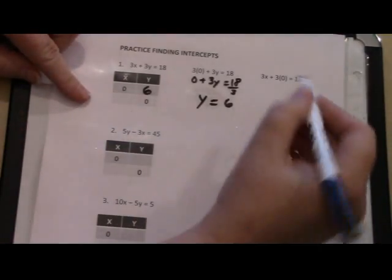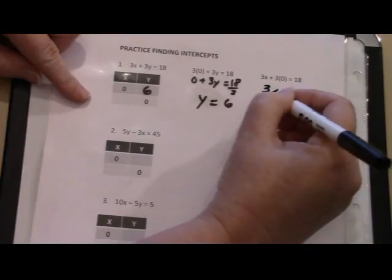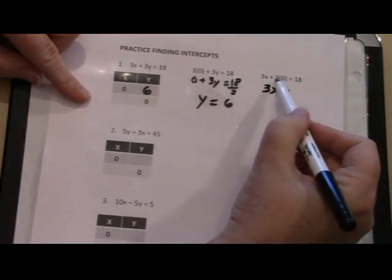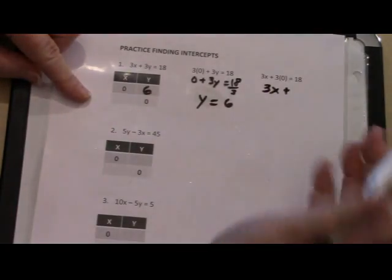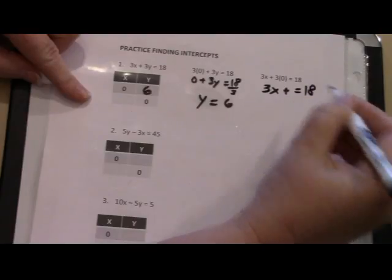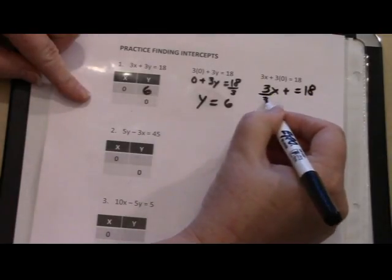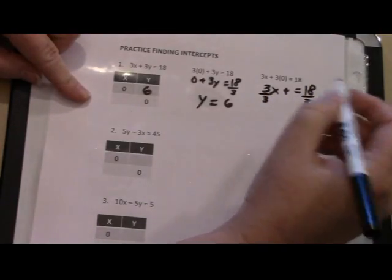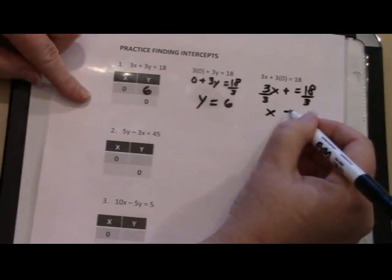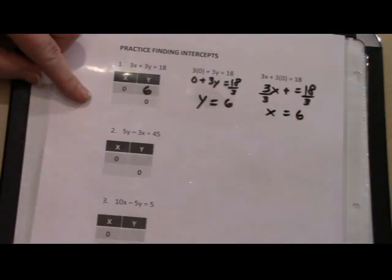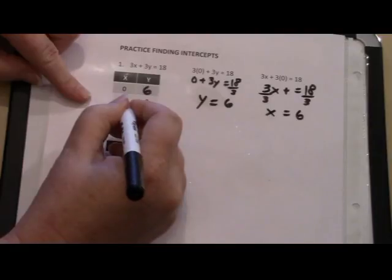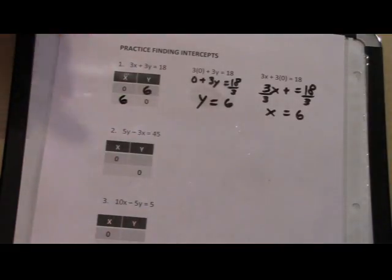Let's find our second coordinate. We end up with 3x plus 3 times 0 is 0. It just goes away equals 18. I'm going to divide each side by 3 and I'm going to end up with x equaling 6. This ends up to be 6 also. They're not the same point though because our x's and y's have to be consistent. 0, 6 is a different coordination than 6, 0.